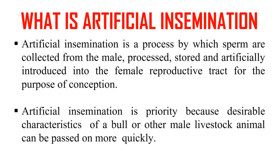The next technique is artificial insemination. It is a process by which sperms are collected from a male, processed, stored, and artificially introduced into the female reproductive tract for the purpose of conception. Artificial insemination is valuable because desirable characteristics of a bull or other male livestock animal can be passed on more quickly by transferring semen of superior quality males to increase animal livestock.